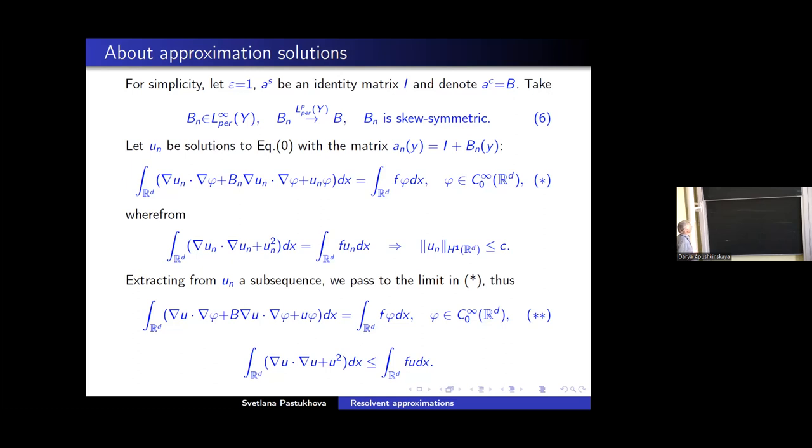Wherefrom we deduce the energy identity, and the corollary will be boundedness of the sequence of solution u_n in H^1 norm. And extracting from u_n some subsequence converging weakly, we can pass to the limit in the integral identity star and come to the integral identity two stars, which show that limit function u is the approximation of the problem one ε, of the equation zero.